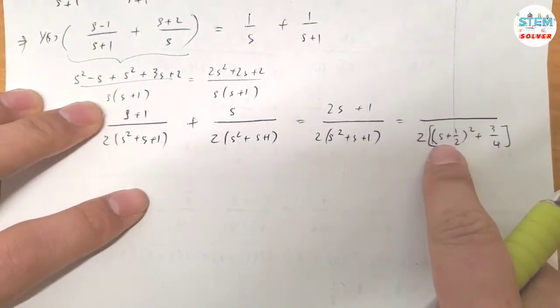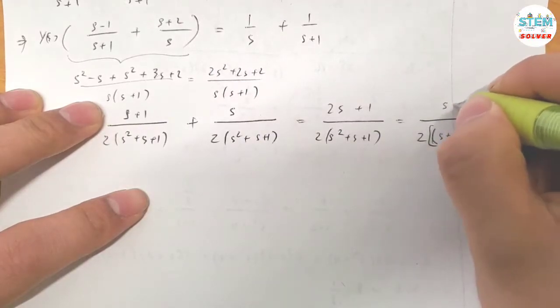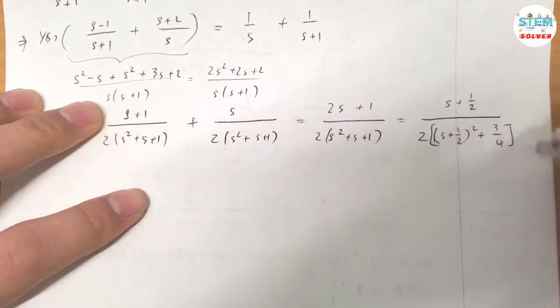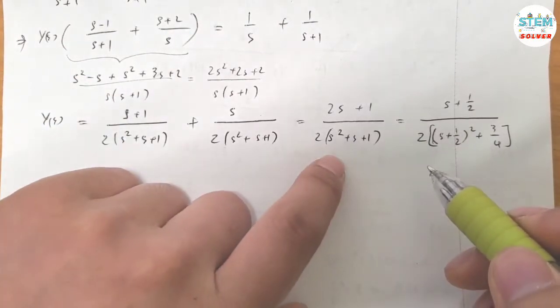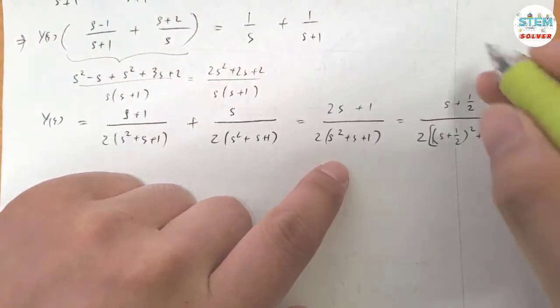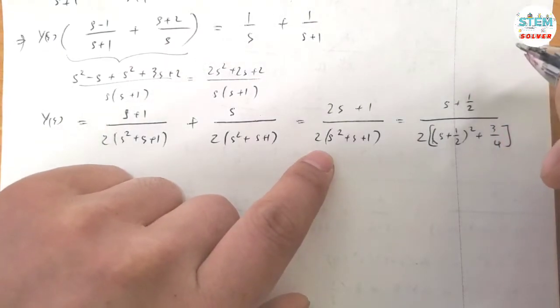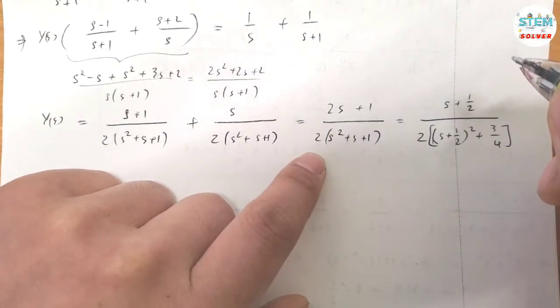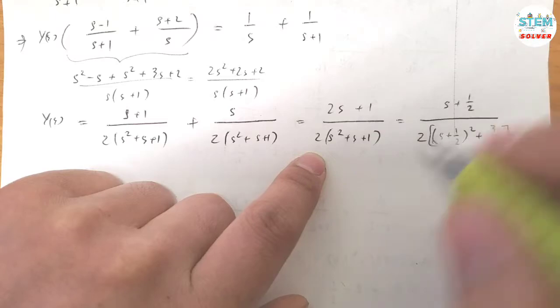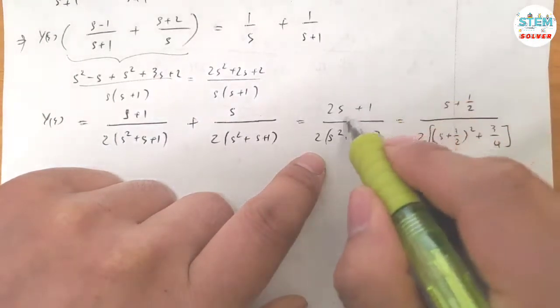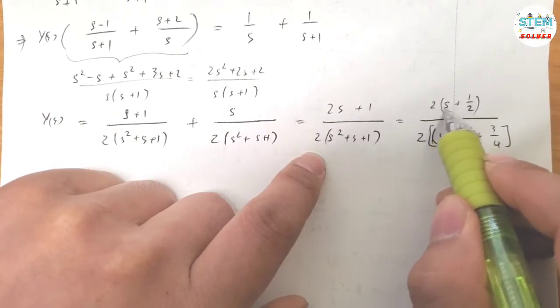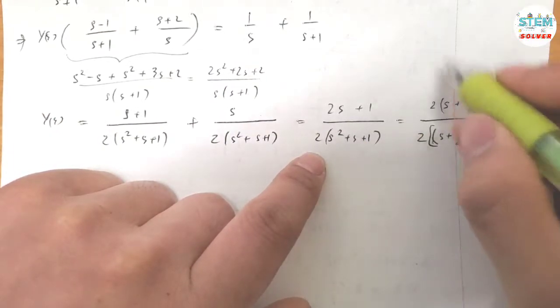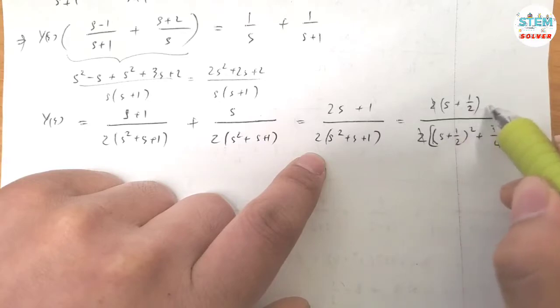And I also need to have S plus 1/2 on the top. So on the top, I factor out the 2. So 2 times S is 2S plus 2 over 2 is just 1. This 2 and this 2 cancel out. And this matches with this.